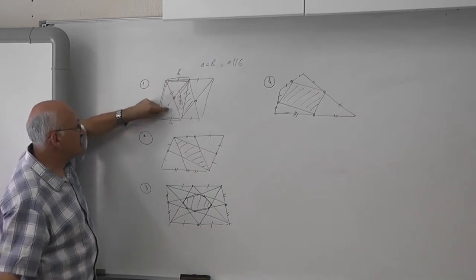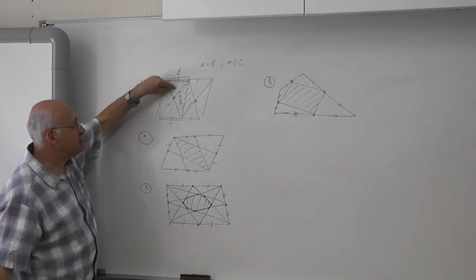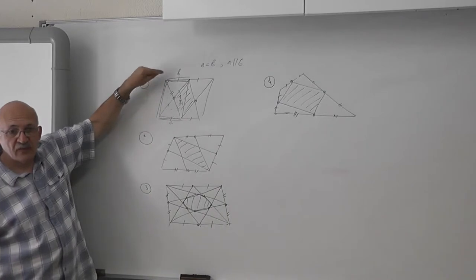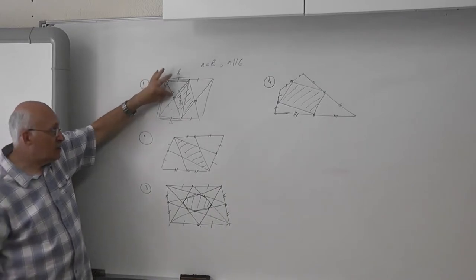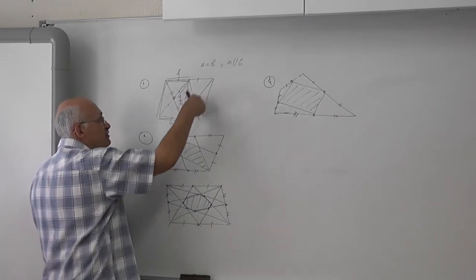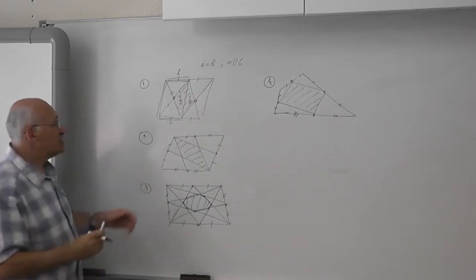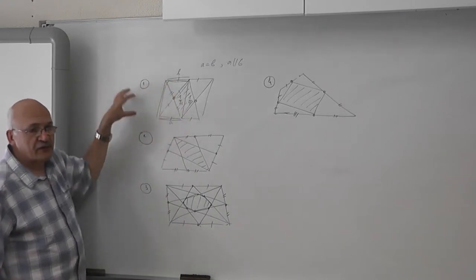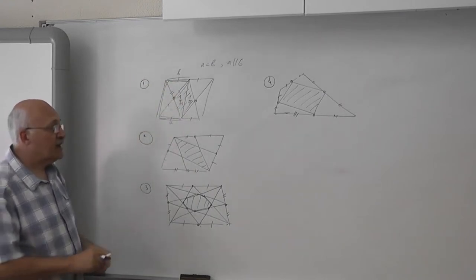This area is equal to this area, this area is equal to this, this to this. And so we have four equal parts, one-fourth. And this is one-fourth of this parallelogram. The same thing. Together they have made one-fourth of the entire table.